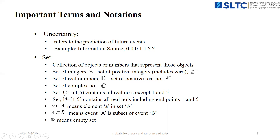Another set C = (1, 5) — closed by open parentheses — represents all real numbers between 1 and 5, excluding 1 and 5. Set D = [0, 5] — closed by square brackets — contains all real numbers including the endpoints. The notation 'a ∈ A' means that element a belongs to the set A, where capital A is the set and small a is an element of that set.